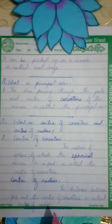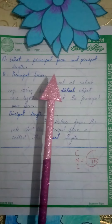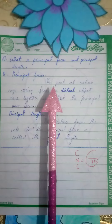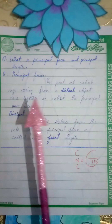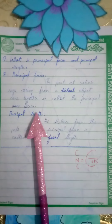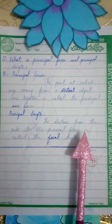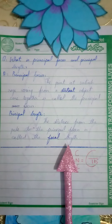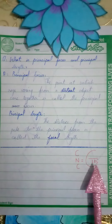Question number five: What is principal focus and focal length? The point at which rays coming from a distant object come together is called the principal focus. The distance from the pole to the principal focus is called the focal length.